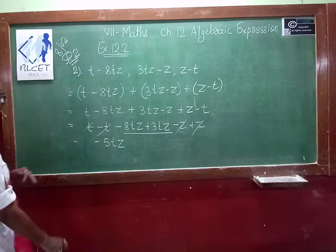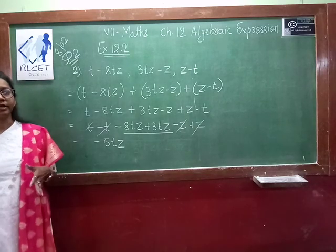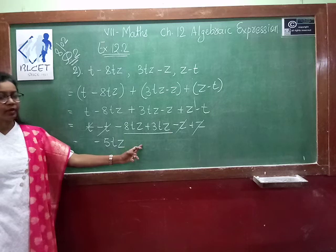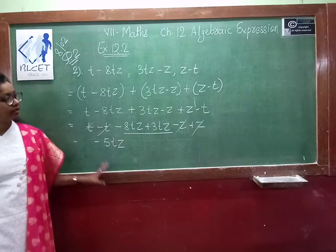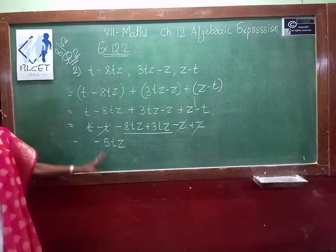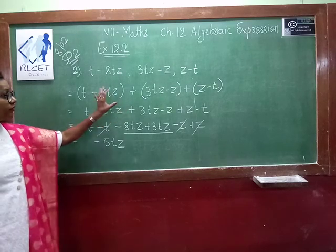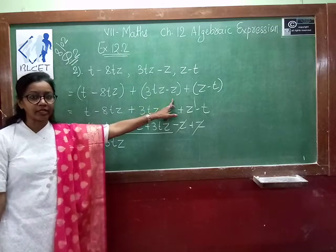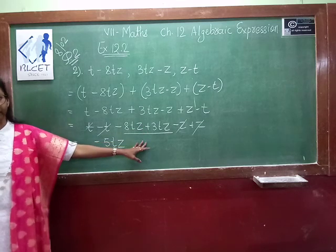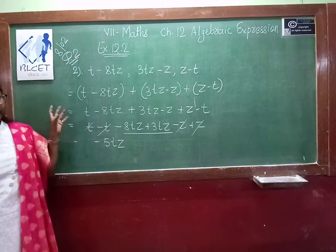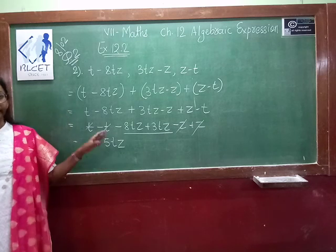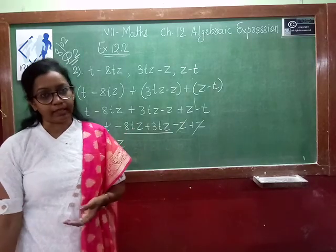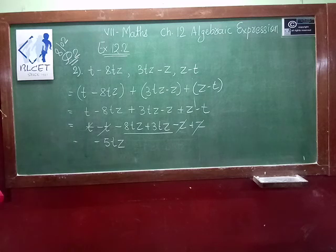This is the horizontal method; that was the vertical method. It is up to you which method to apply. I prefer the horizontal method: make brackets, keep the addition sign, open the brackets, then easily do the addition and subtraction. In the column method you have to find blank spaces and keep 0 there, and a little mistake can be possible. So this way you can solve question number 2.